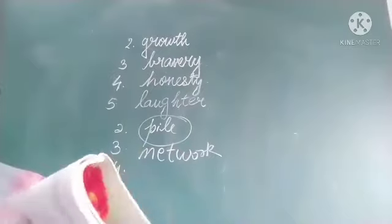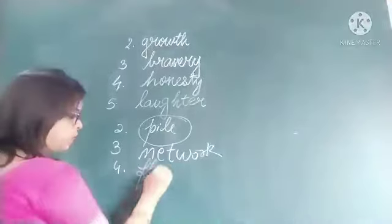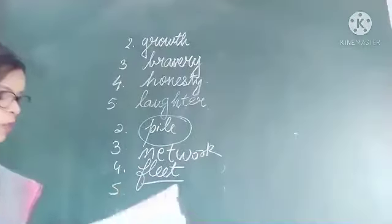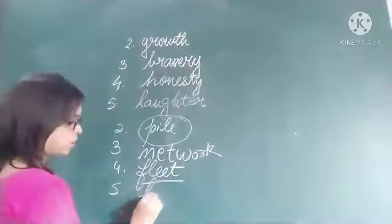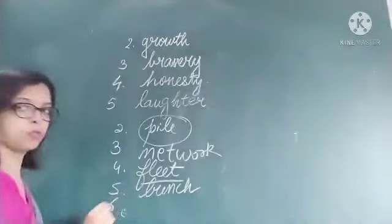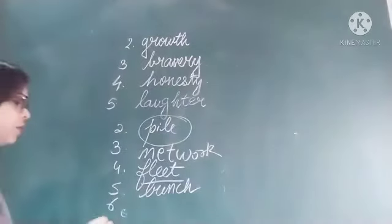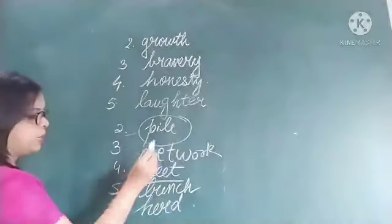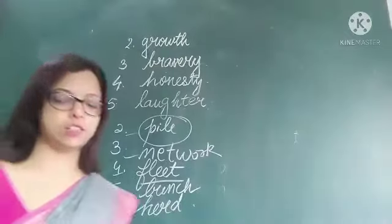Fourth: 'There is a fleet of taxis parked outside the hotel' — circle fleet. Fifth: 'We bought a bunch of bananas at a food shop' — circle bunch. Sixth: 'They saw a large herd of elephants bathing in the river' — circle herd. So the collective nouns are: army, range, pile, network, fleet, bunch, and herd.